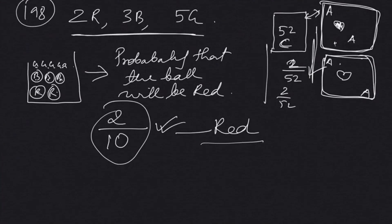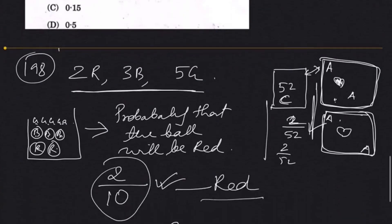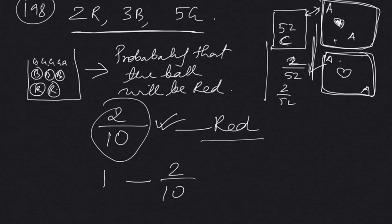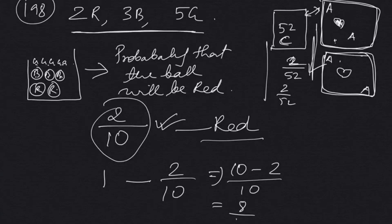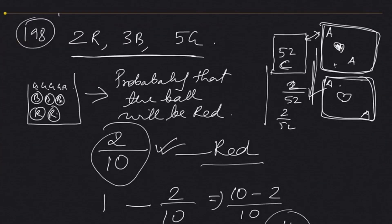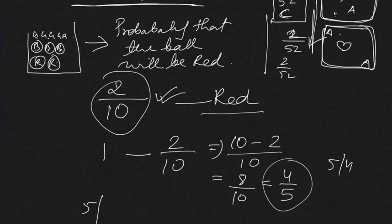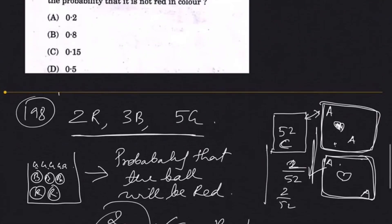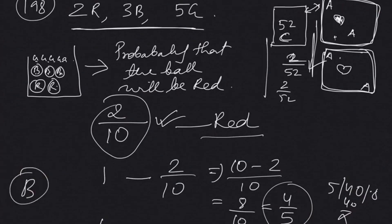But the question is: what is the probability that it is NOT red in color? In probability, if you want the complement, you always subtract the probability from 1. So 1 minus 2/10 gives you (10 minus 2) by 10, which is 8 by 10, which simplifies to 4 by 5, which is 0.8. Yes, option 0.8.